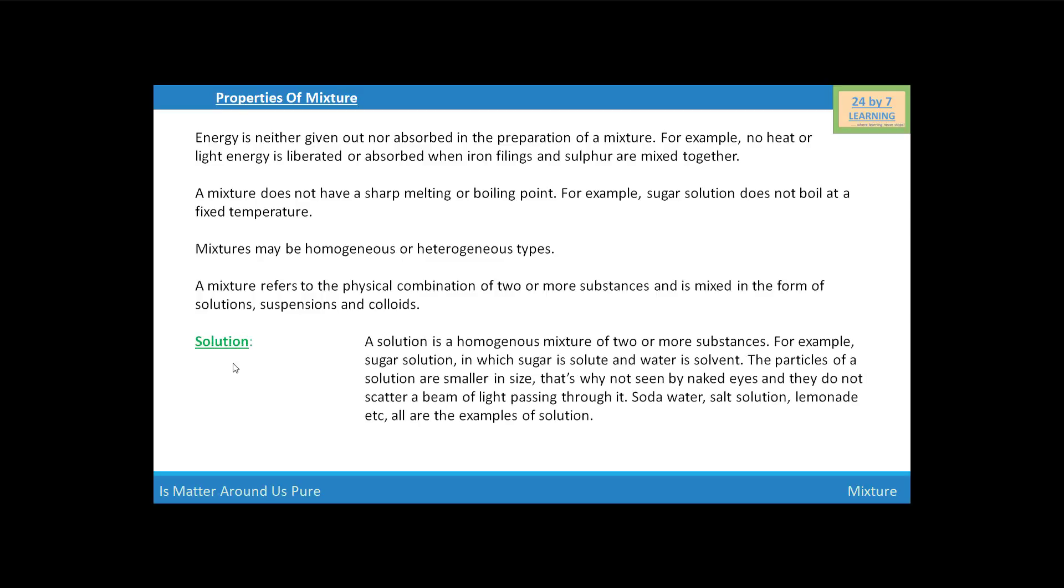Now, we are going to discuss about the solution. A solution is a homogeneous mixture of two or more substances. For example, sugar solution, in which sugar is a solute and water is a solvent. The particles of a solution are smaller in size, that's why not seen by naked eyes and they do not scatter a beam of light passing through it. Soda water, salt solution, lemonade, etc., all are the examples of solution.